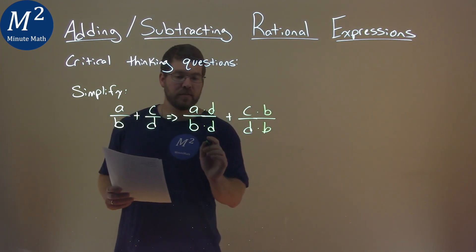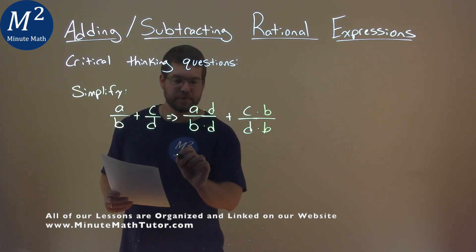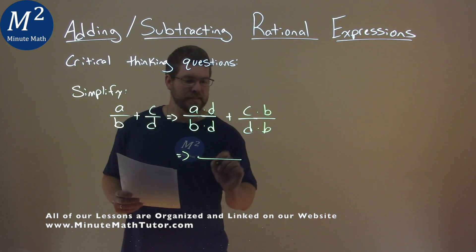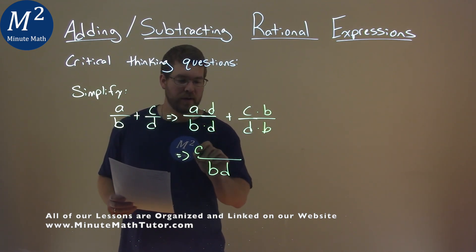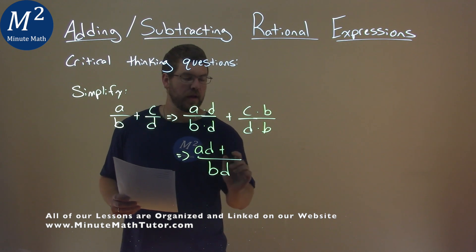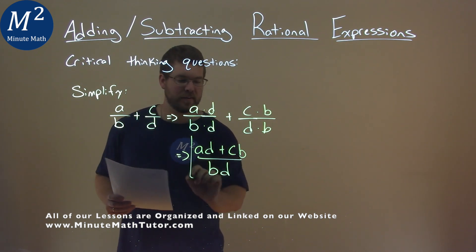Now we can combine these as one big fraction. We have BD in the denominator, B times D. In the numerator, we have A times D plus C times B, and that's it.